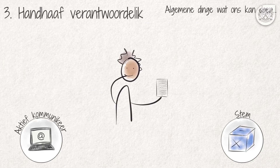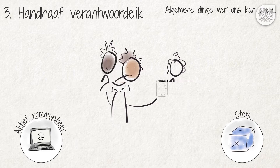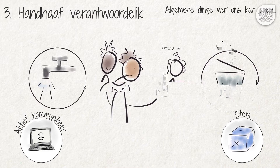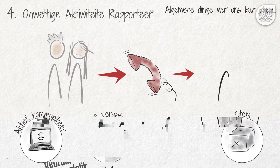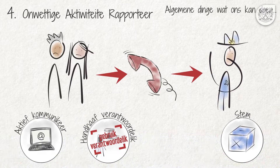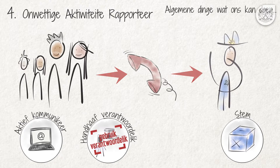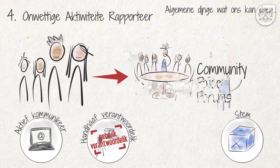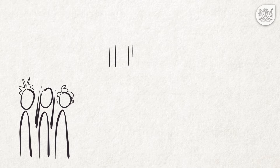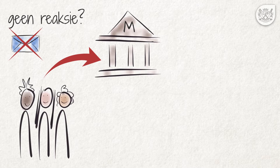Derdens, behoort reagerende burgers ook verantwoordelik teenoor ander lede van die gemeenskap op te tree. So byvoorbeeld kan ons self ons strate skoonhou deur nie rommel te strooi of te stort nie, en om skaarsbronne soos water nie te mors nie. In die vierde plek, moet ons alle onwettige aktiwiteite rapporteer en so verseker dat ons, as wetsgehoorsame burgers, tot 'n beter lewenskwaliteit vir ons en ons kinders kan bydra. Een manier om dit te doen is deur aktief aan gemeenskapspoliseringsforums deel te neem. Indien ons met die munisipaliteit probeer skakel en kommunikeer het en steeds geen reaksie ontvang het nie, kan ons besorgdheid deur petisies, die media en vreedsame optogte oordra.